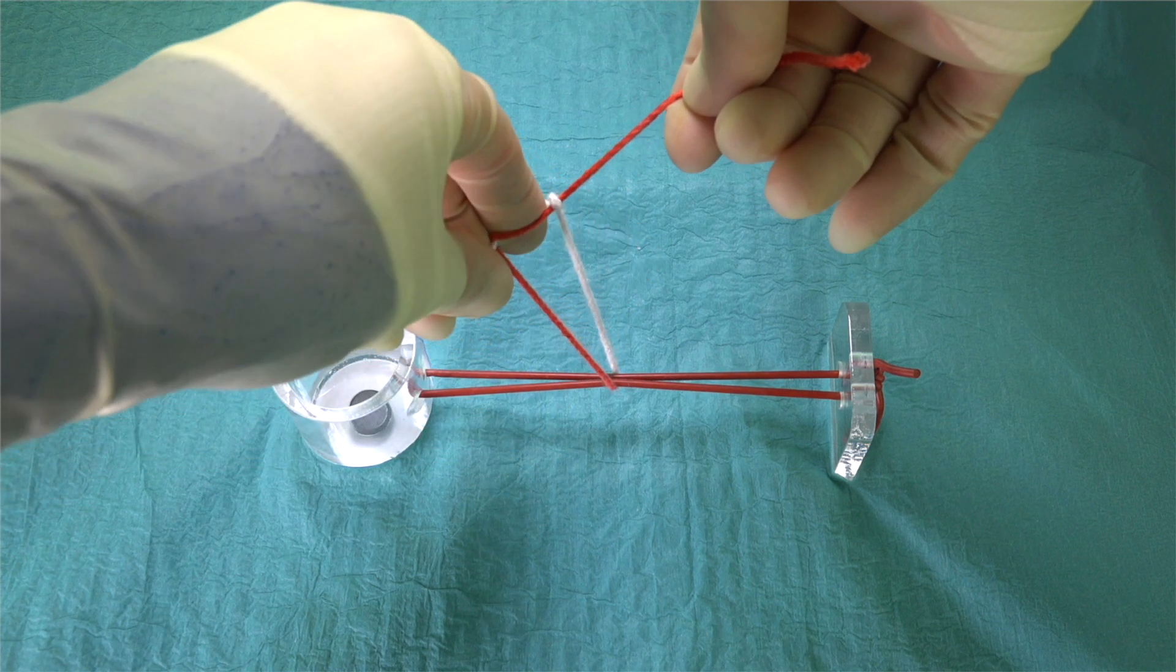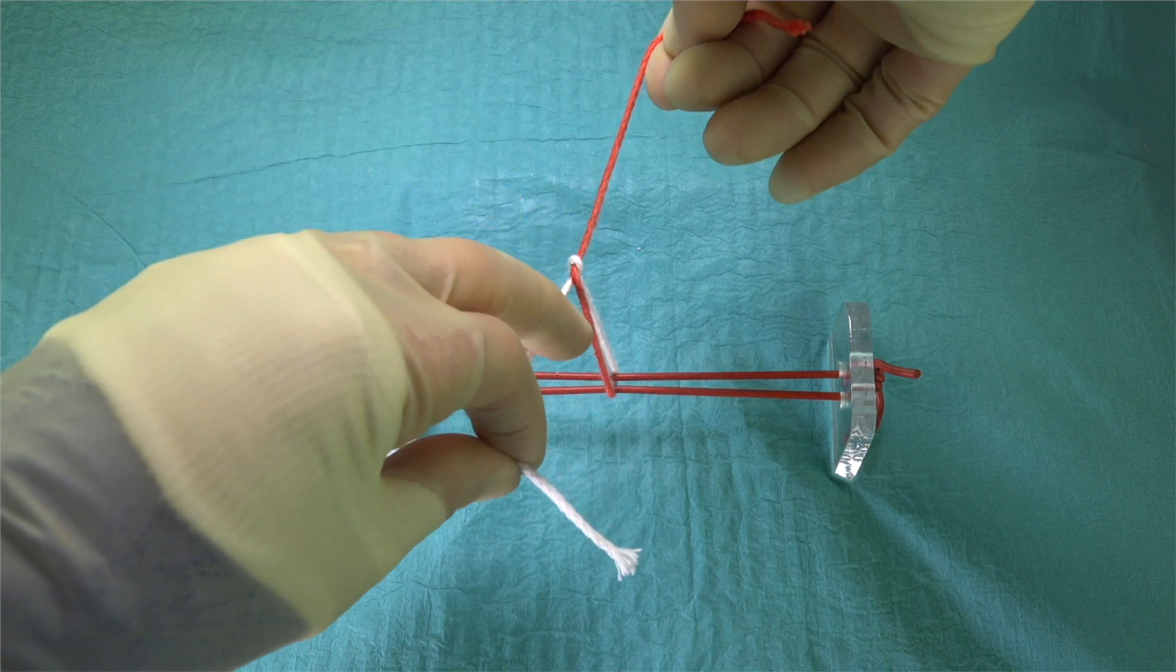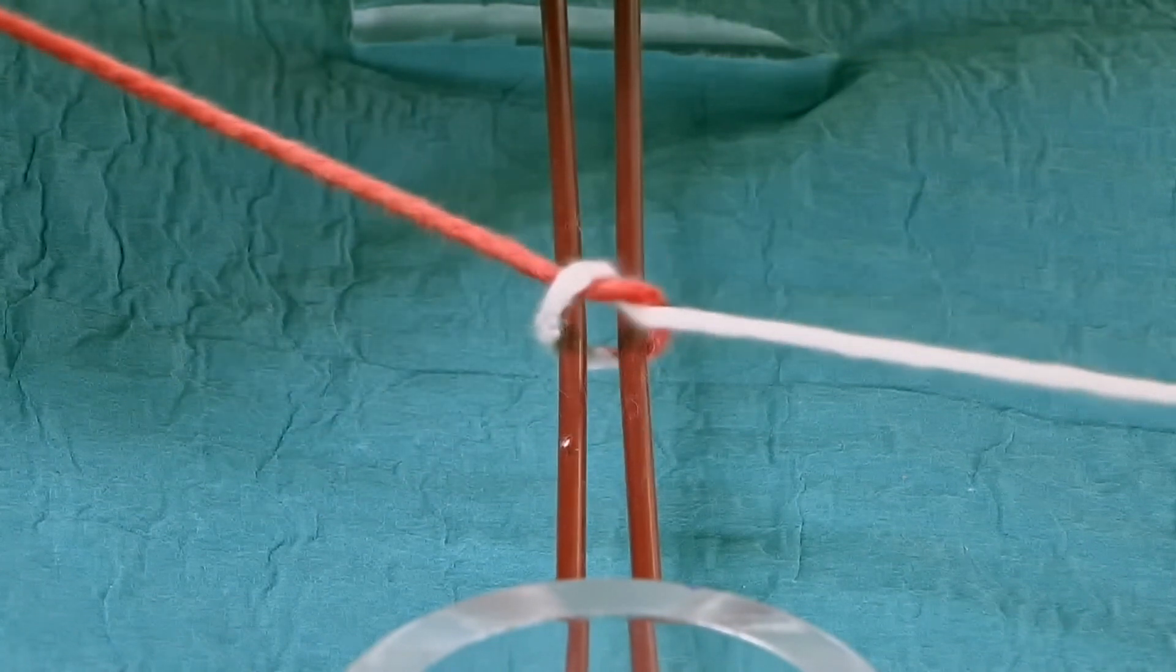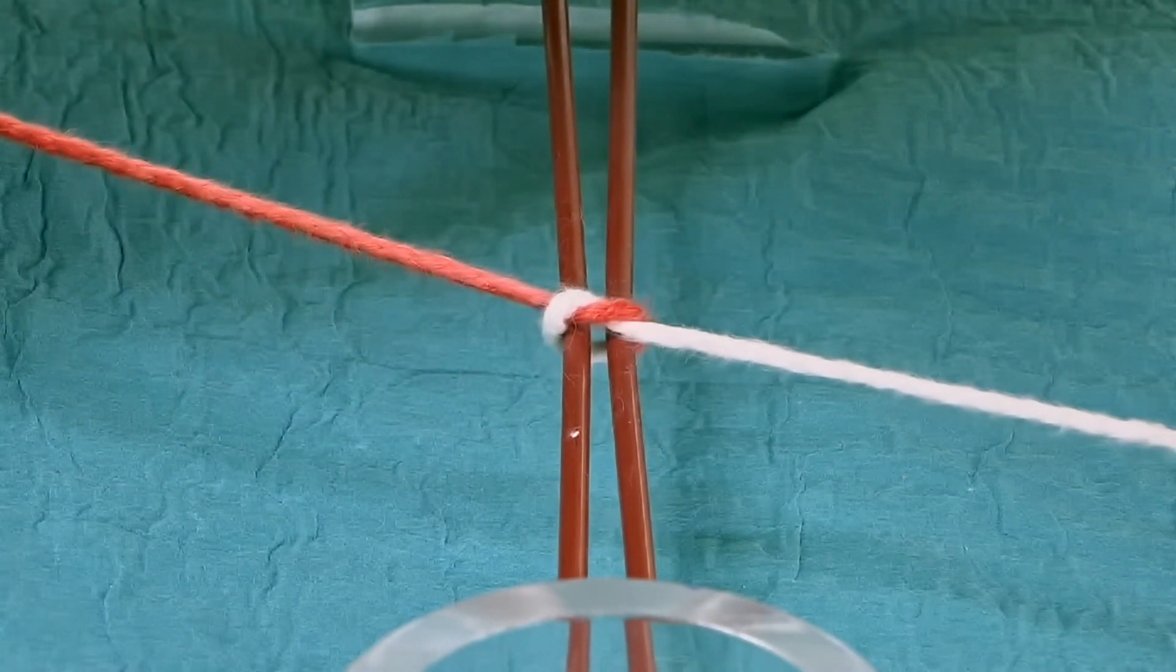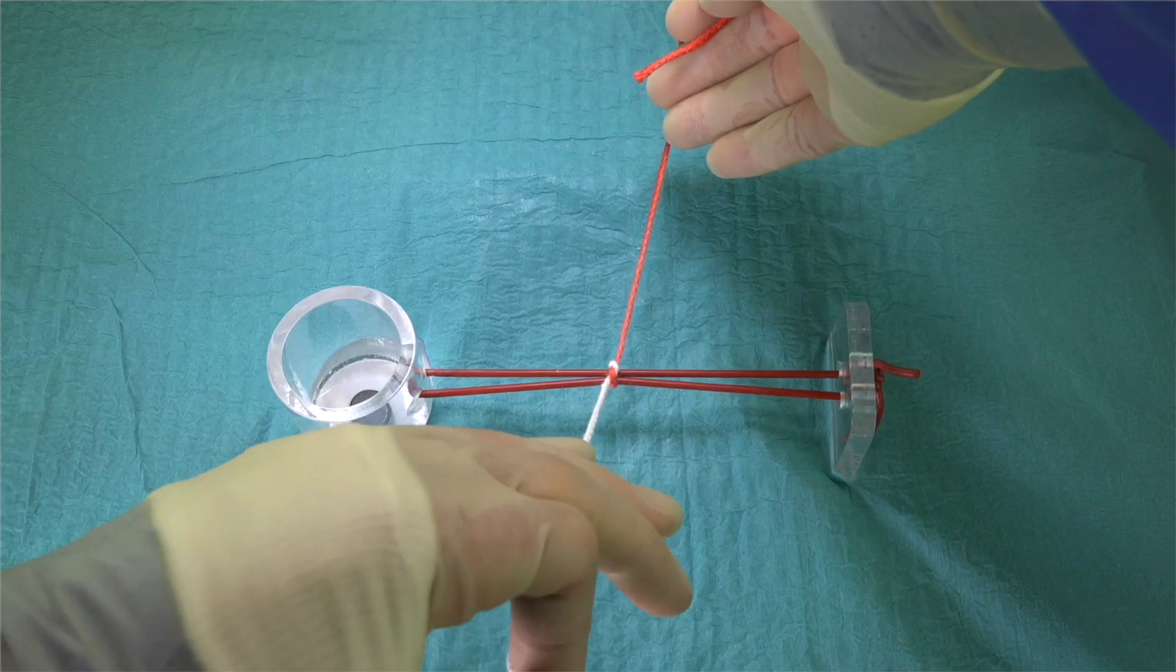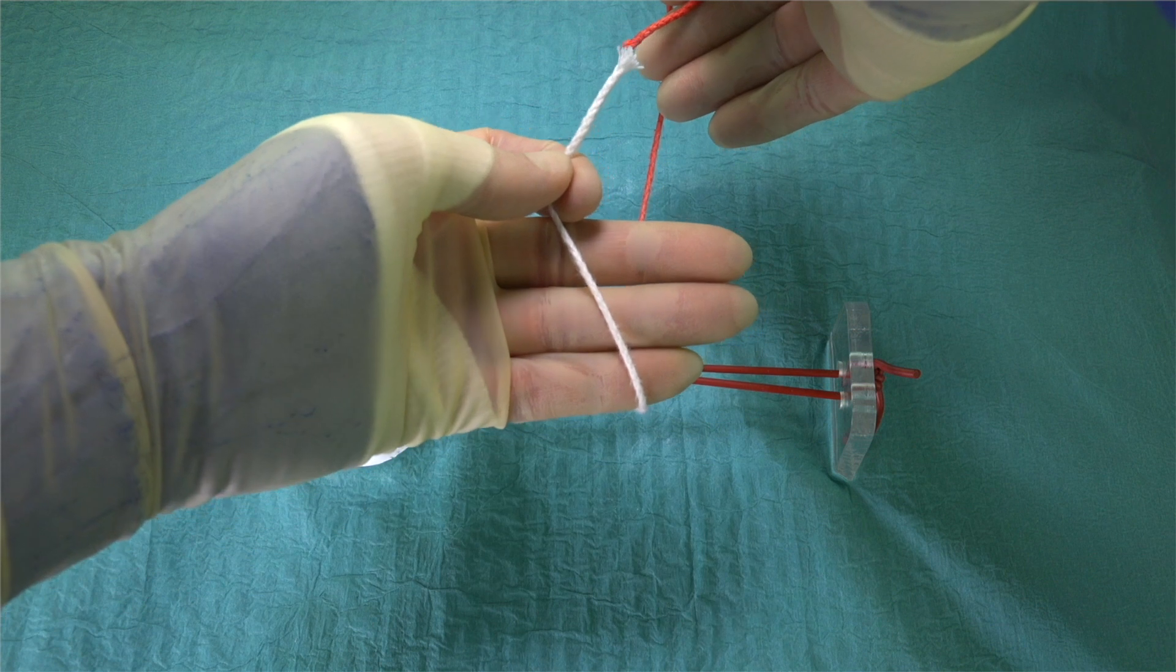This requires the short end to be released and then re-grasped as it has passed through the loop. The left hand then pulls the short end of the suture towards us whilst the long end is taken away from us at 180 degrees. This crossing of the hands is vital as it allows each of the throws of the reef knot to sit flat and prevents any slippage of the knot.